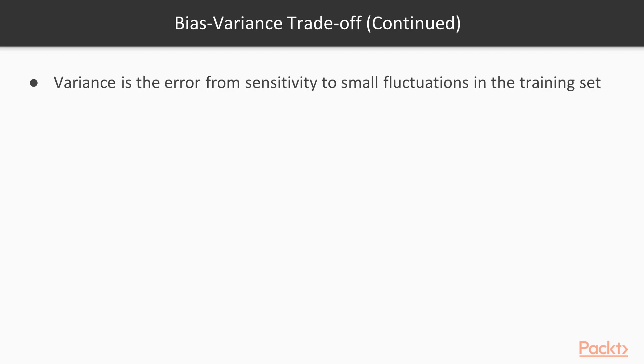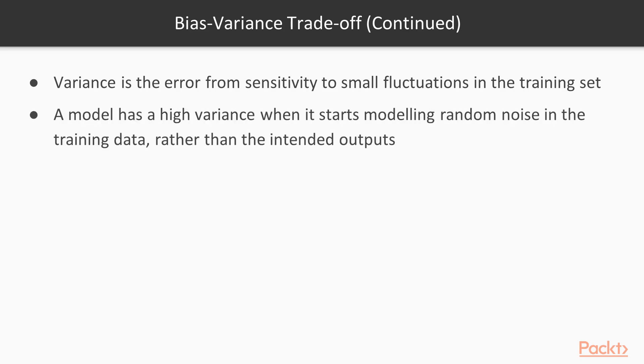In the case of variance, we get the error as a result of the model becoming too sensitive to the fluctuations in the training set. We say our model has high variance when it captures random noise in the training data rather than generalizing to the actual problem. For example, in this graph, the line is trying to fit the data too perfectly, which can result in the data being too specific to the training data.